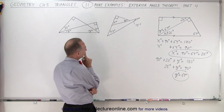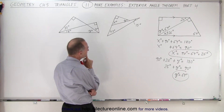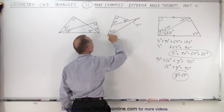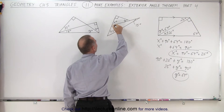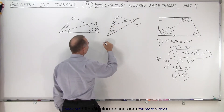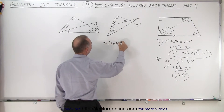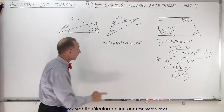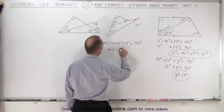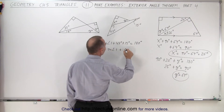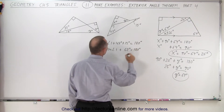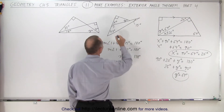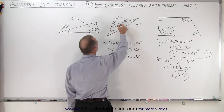Our second example. We have this triangle — we know this angle and we know this angle, which means we can find the third angle. Let's call that angle 1. The measure of angle 1 plus 47 degrees plus 15 degrees must add up to 180 degrees. Adding 47 and 15 gives 62 degrees, so the measure of angle 1 plus 62 degrees equals 180 degrees. Therefore the measure of angle 1 is equal to 180 minus 62, which is 118 degrees.